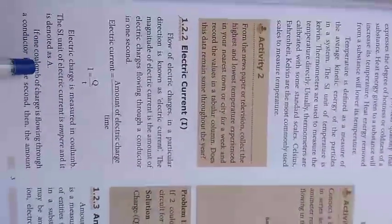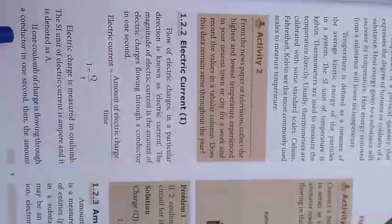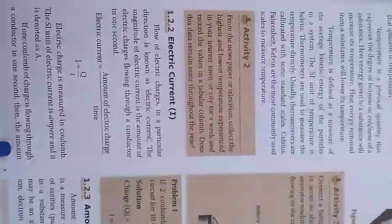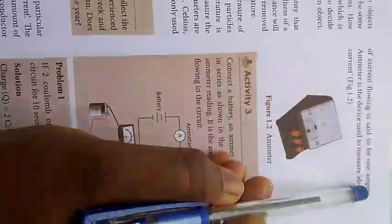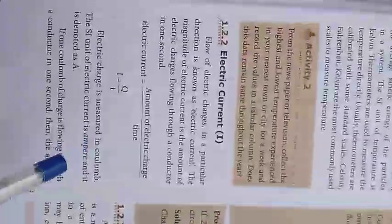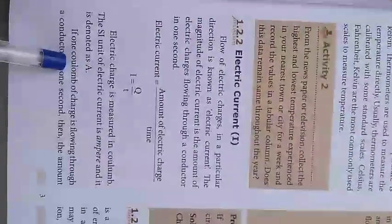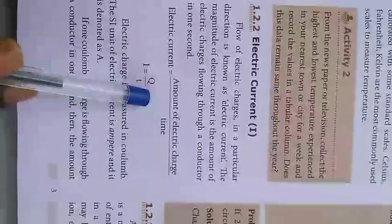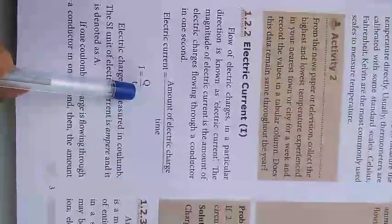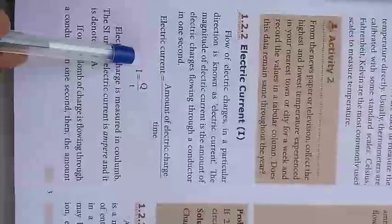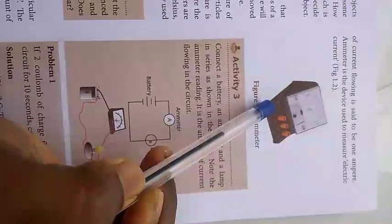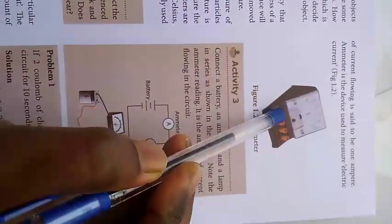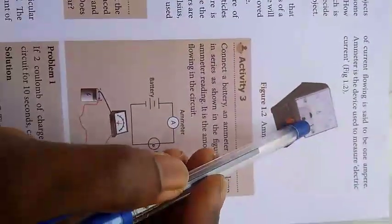One coulomb of charge flowing through a conductor in one second means the current flowing is one ampere. An ammeter is the device used to measure electric current.